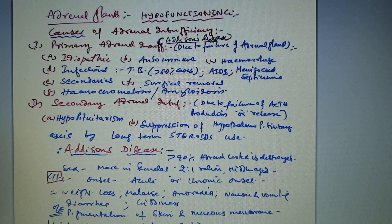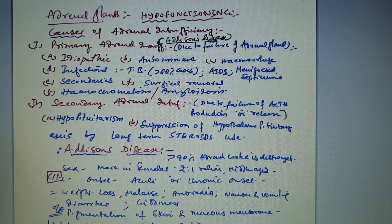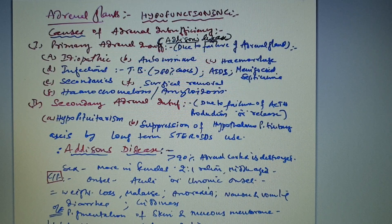The cause of primary adrenocortical insufficiency could be idiopathic in most cases. It can also be due to autoimmune disorders, hemorrhage, or infections. TB (tuberculosis) accounts for 80% of cases. Other causes include AAC disorders such as septicemia, metastases, surgical removal, hemochromatosis, and amyloidosis.